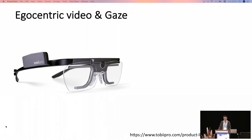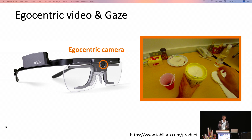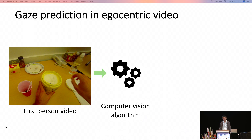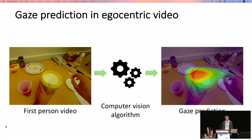I'll introduce some background on ego-centric video and gaze. Using Tobii glasses as an example: there is an ego-centric camera facing outside, capturing the same view as the camera wearer, and eye trackers on the bottom of the glasses can get the gaze position inside this ego-centric view. Our goal is to use a computer vision algorithm to predict the gaze position in a first-person video. This has several applications like understanding human behaviors, joint attention estimation, and so on.